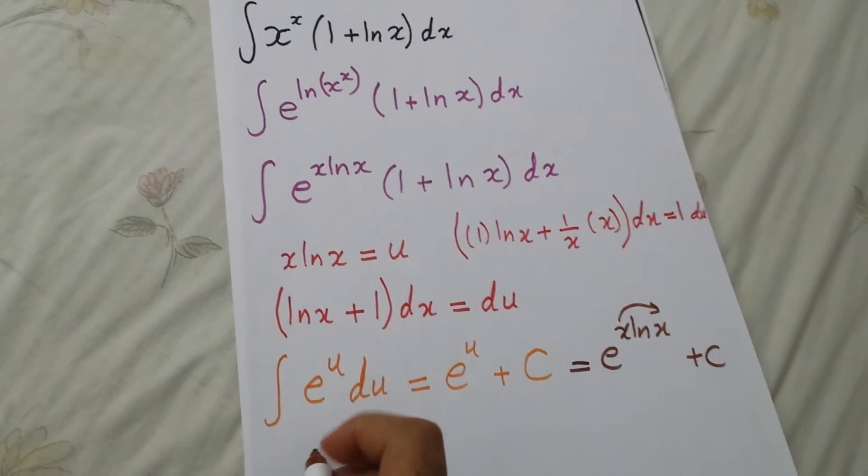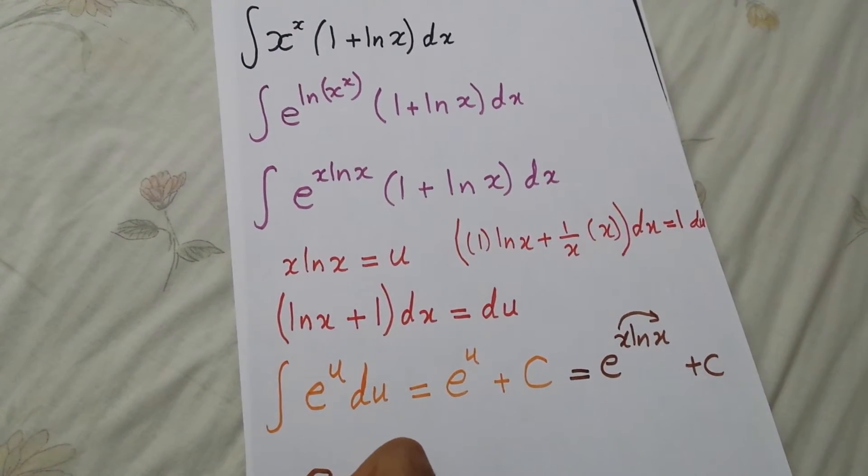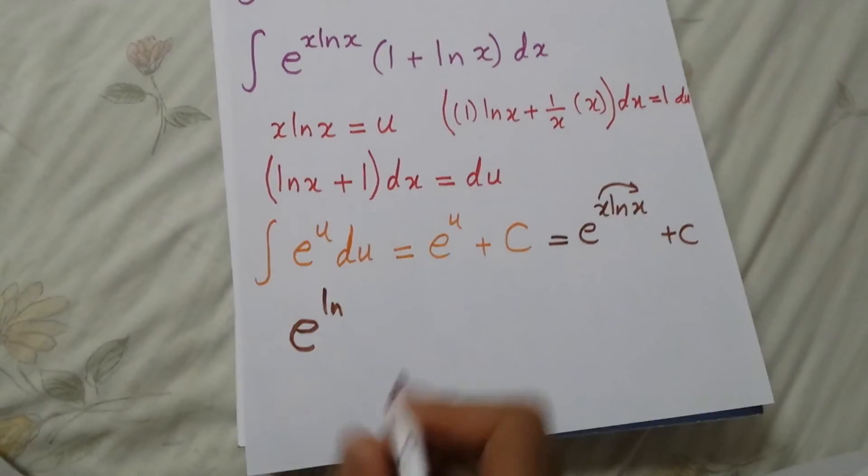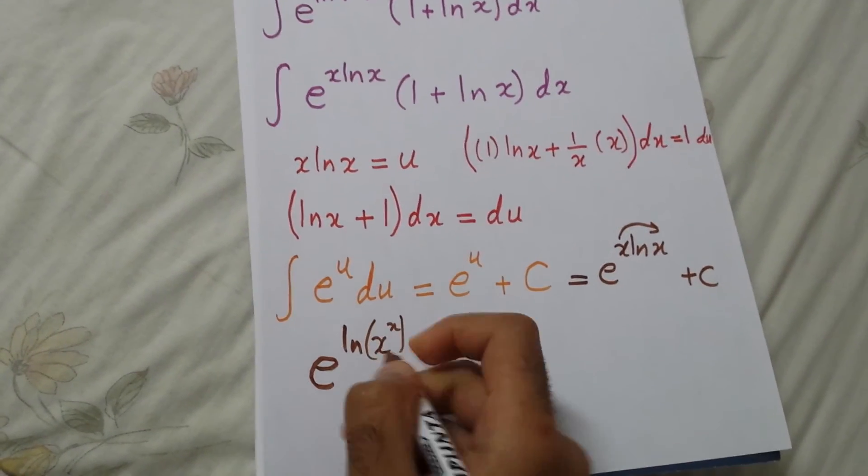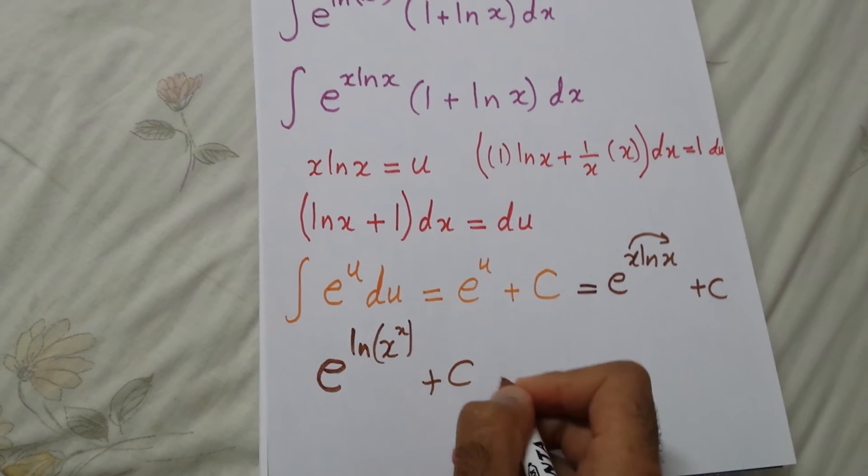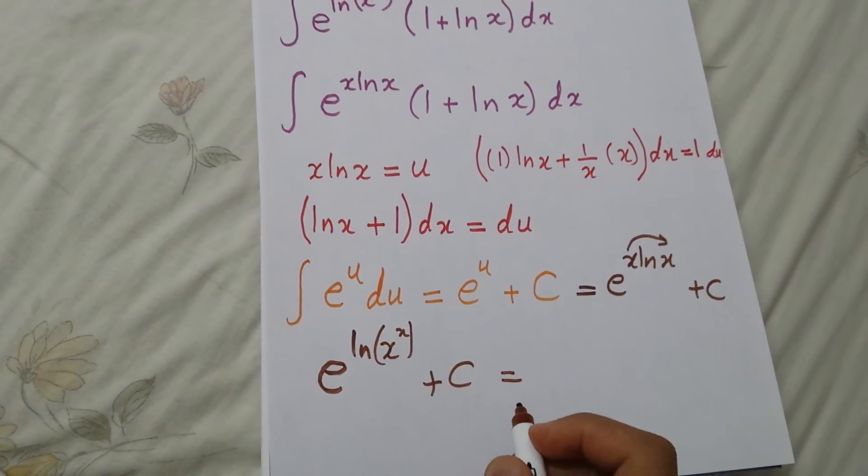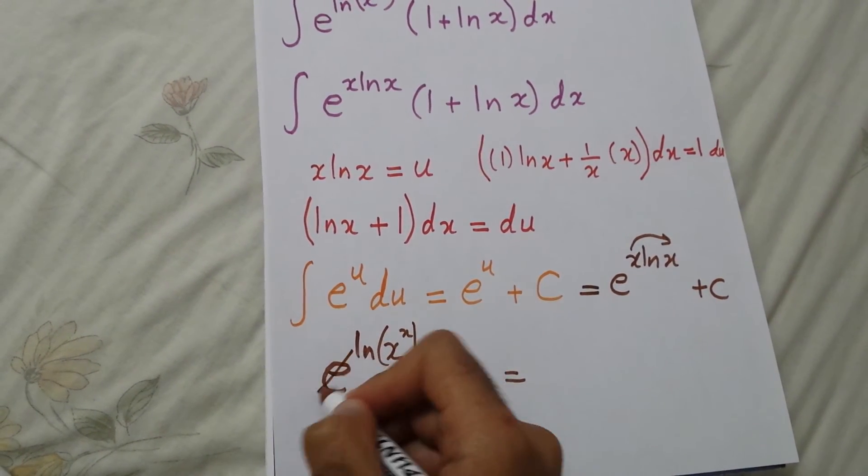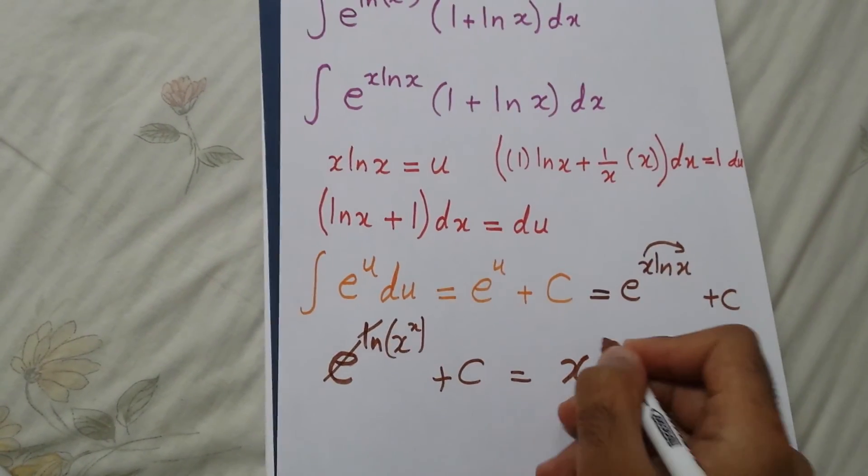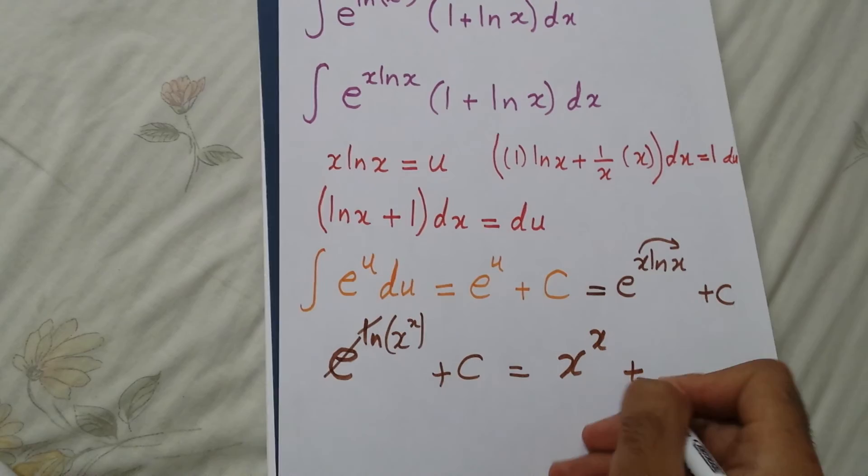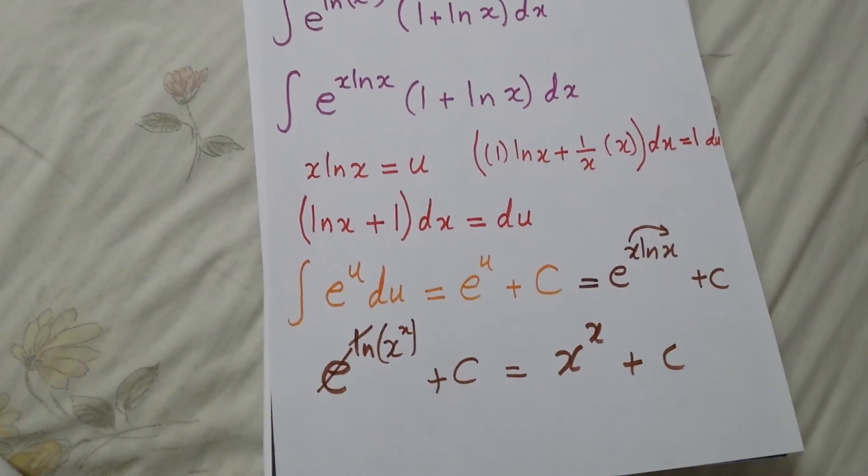So it will be e to the ln e to the ln x to the x plus constant. More simplified: e with ln will be x to the x plus constant. Thank you.